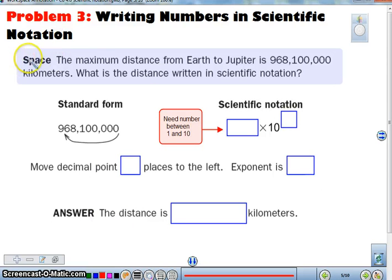How do we write a larger number? The maximum distance from the Earth to Jupiter is 968,100,000 kilometers. That distance in scientific notation. Again, always thinking, a number between 1 and 10. So place your decimal point.